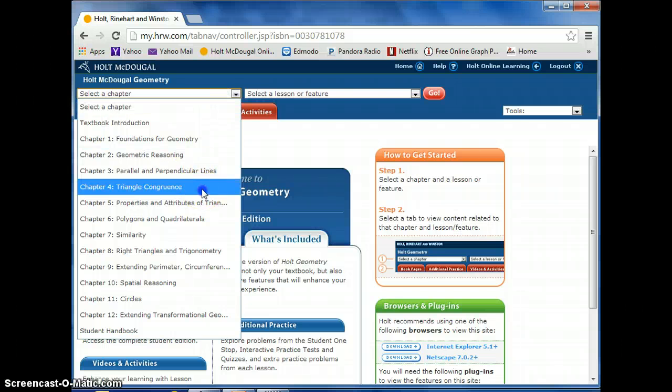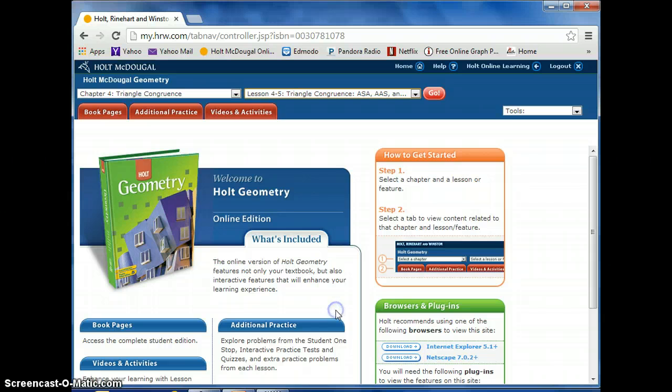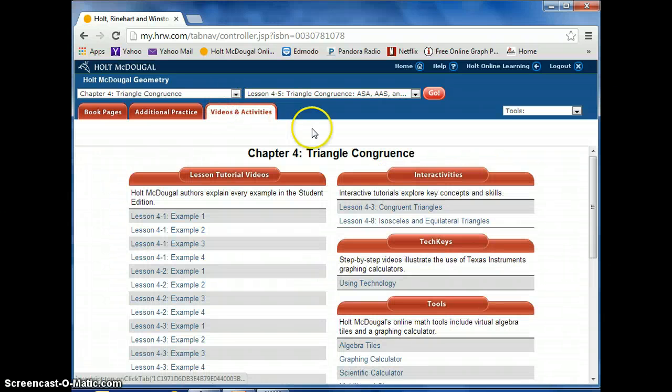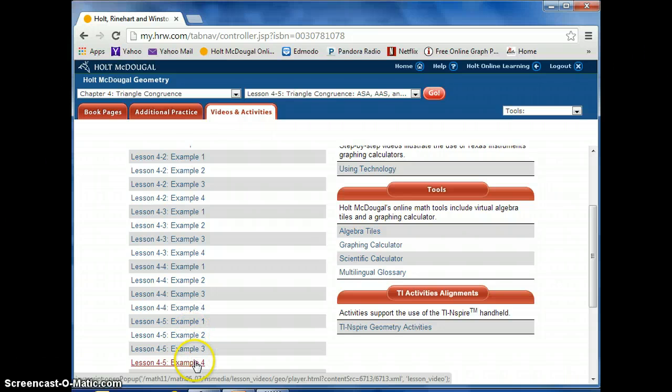We're going to select Chapter 4, Lesson 5, and click on videos and activities. That's how you get to the lesson tutorial videos. If you scroll down, you'll find Lesson 4-5 examples, 1, 2, 3, and 4.